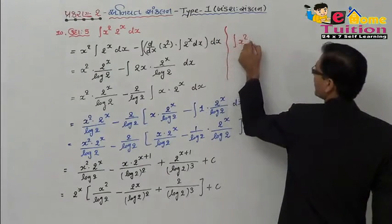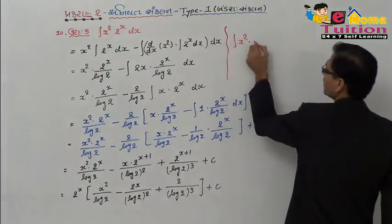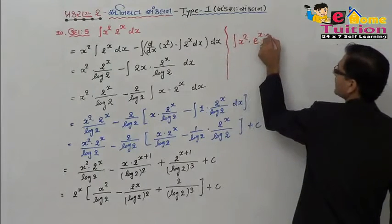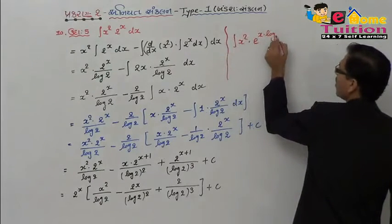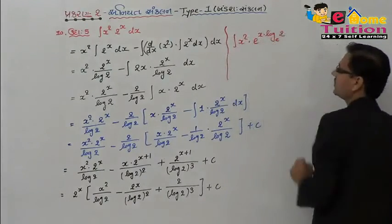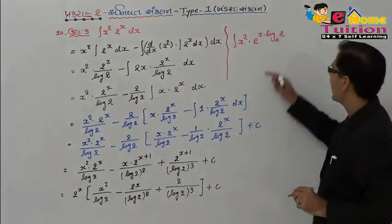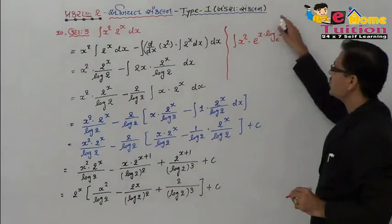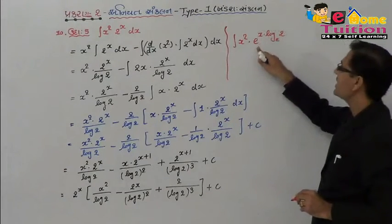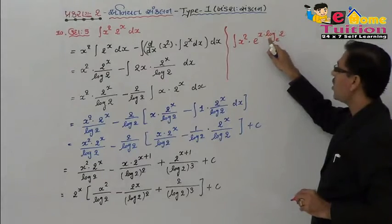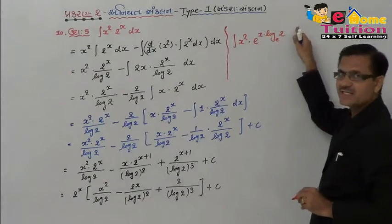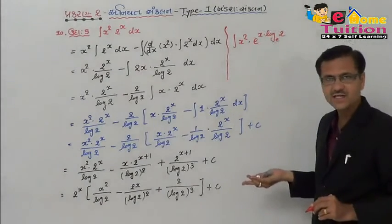x square into e raise to x into log e base 2. e base log e base 2 raise to x is equal to 2 raise to x.